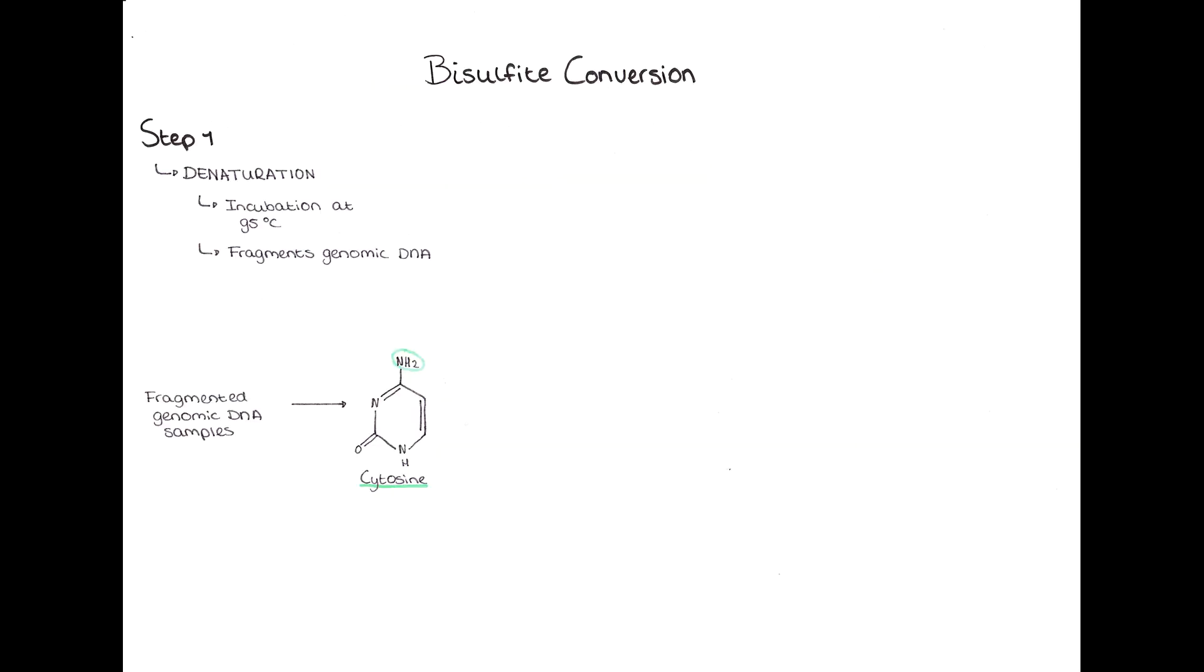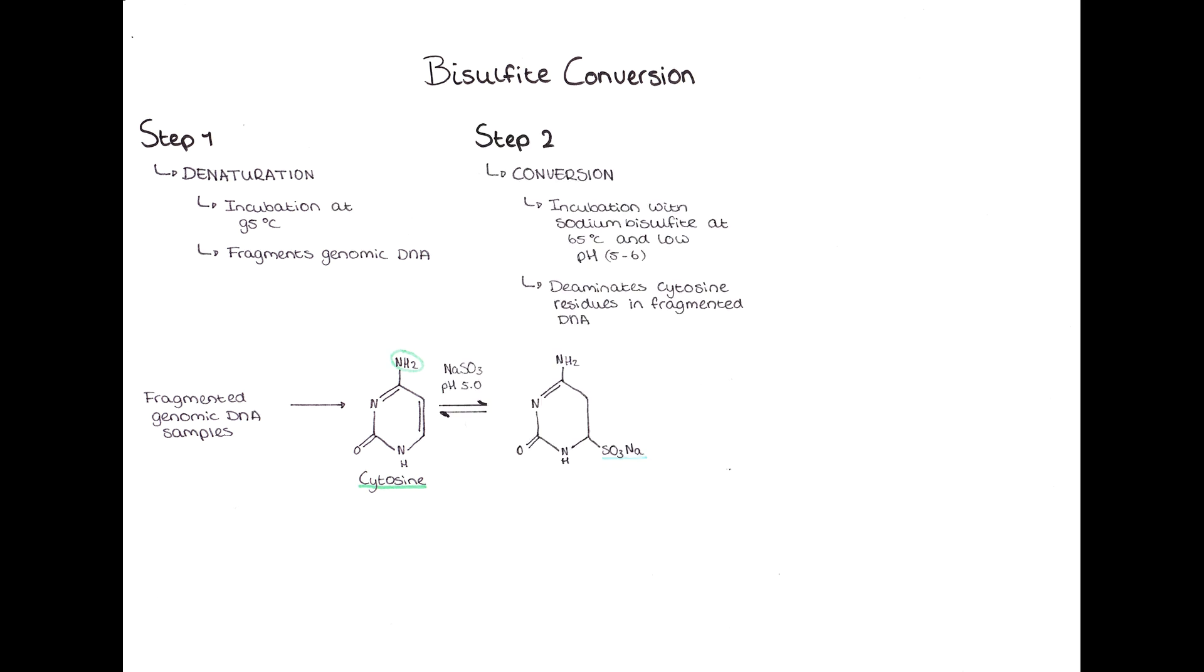To assess the methylation status of a strand of DNA, bisulfite conversion is used. This technique converts the unmethylated cytosine into a uracil. First, the DNA is denatured to weaken the bonds and create fragments of genomic DNA. Then, the sodium bisulfite binds to the cytosine, creating cytosine sulfonate.